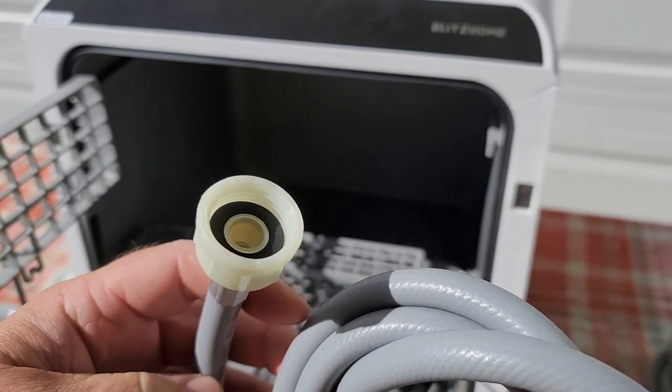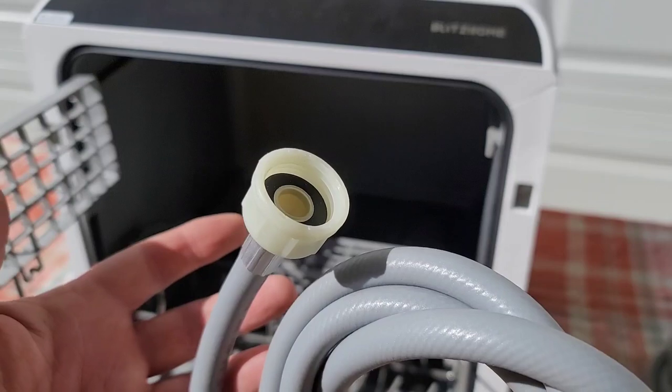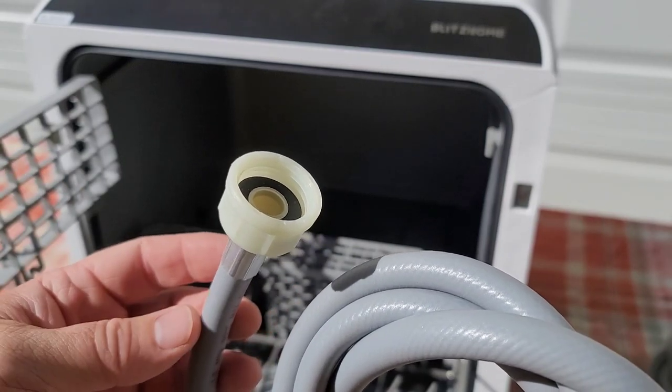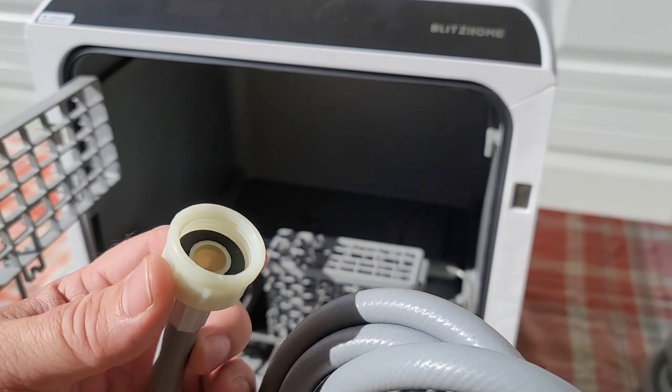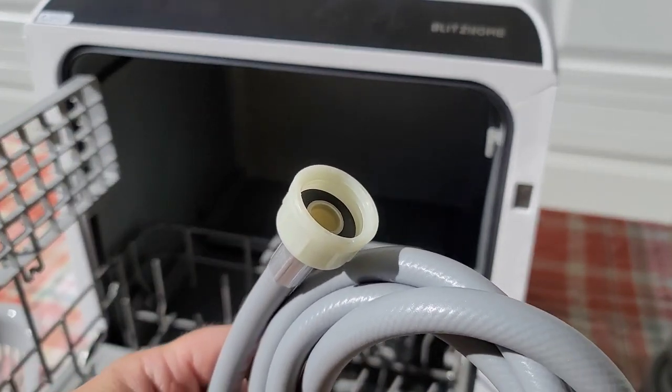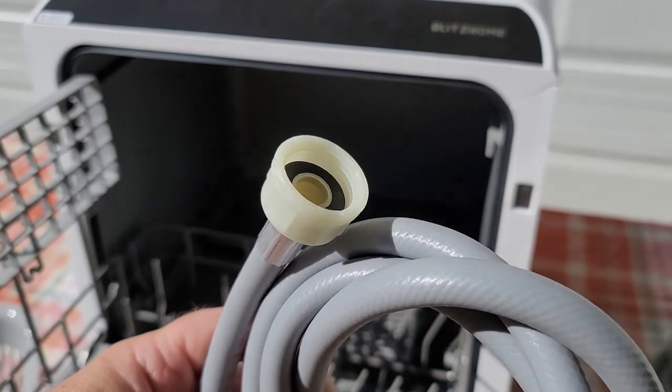Directions tell us that there are three ways to hook this up. You can hard line it in right to your water line, hook it up to your faucet, or hook it to a garden hose. I'm going to do the garden hose one because that's the attachment you get. If you want to do the other attachments, you're going to have to buy additional pieces.